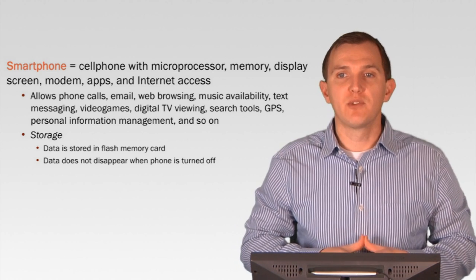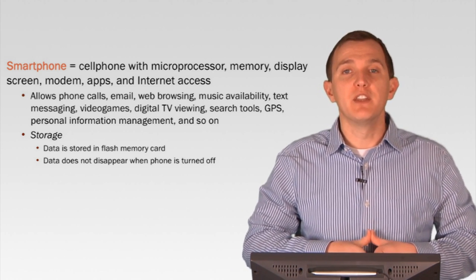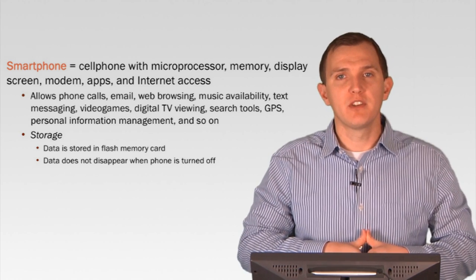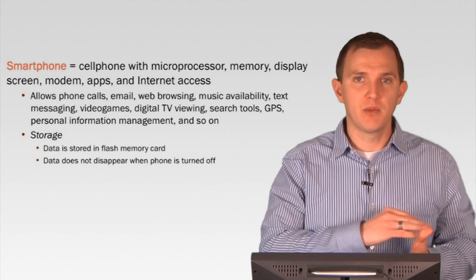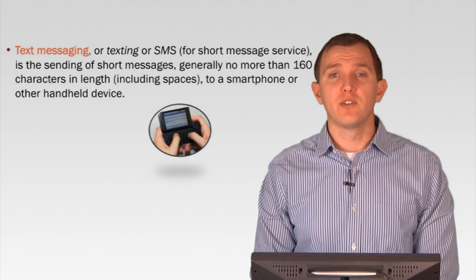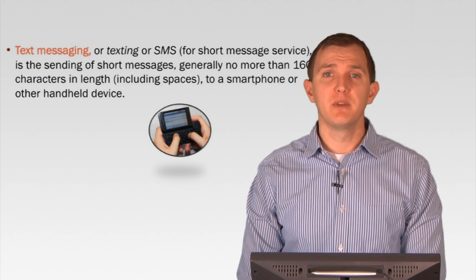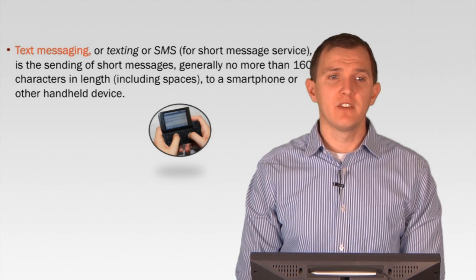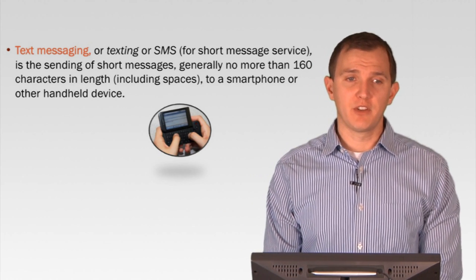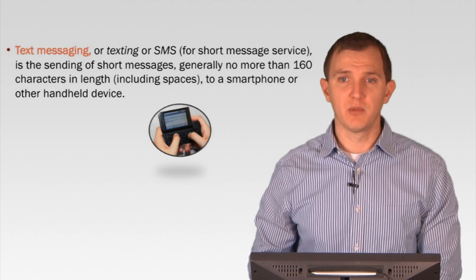Non-volatile memory is the type stored on a flash memory card or hard drive — that memory is safe and secure and does not disappear when the phone is turned off. However, when you talk about RAM, phones do have RAM these days, and that's volatile memory in which the memory is wiped every time it loses power. Text messaging is the sending of short messages, generally no more than 160 characters in length including spaces, to a smartphone or other handheld device — like a brief email that immediately goes directly to someone's handheld device, even more convenient than email.